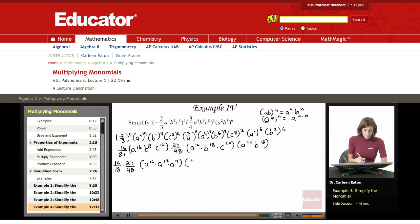Then my b terms, b to the 8th, b to the 18th, and another b to the 18th. For c, I have c to the 12th times c to the 24th, and no c term over here, so just two.